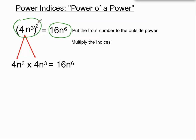So the front number gets put to that outside power and the indices multiply with each other. Some interesting rules there. Sometimes quite tricky.